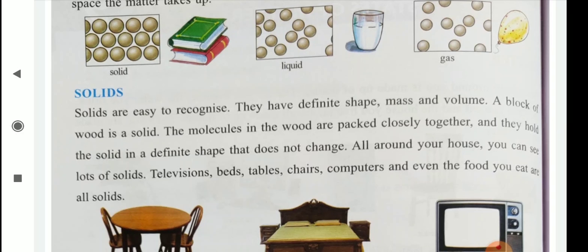A block of wood is a solid. You can easily find out which are solid, which are closely packed. Closely packed molecules are known as solid. For example, wood, book. Like this. They hold the solid in a definite shape that does not change.